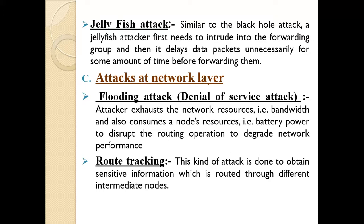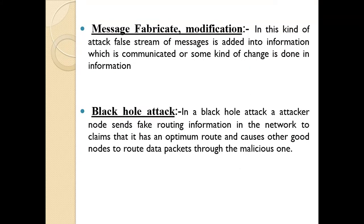Attack at network layer. Flooding attack: consumes network resource bandwidth and also consumes node resources such as battery power, to disturb the routing operation and degrade network performance. Routing tracking: this kind of attack is done to obtain sensitive information which is routed through different intermediate nodes. Message fabrication and modification: in this kind of attack, a false stream of messages is added into the communicated information, or some kind of changes are made to that information.